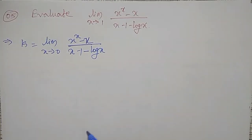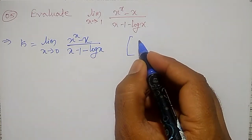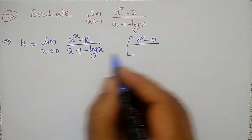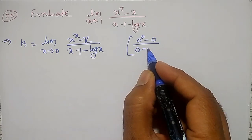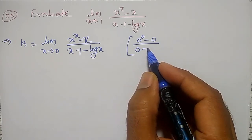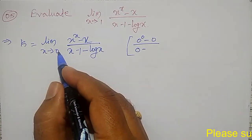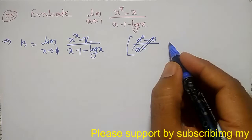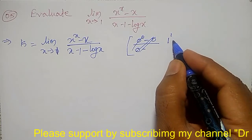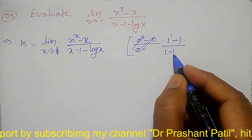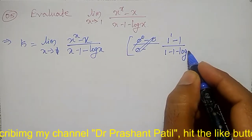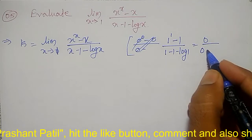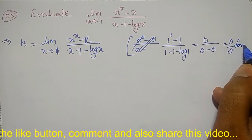Let me call this equal to k: limit as x tends to 1 of x raised to x minus 1 divided by minus x, divided by x minus 1 minus log of x. Now let me check which form it is. At x equal to 1, it becomes 1 raised to 1 minus 1, divided by 1 minus 1 minus log 1. That is 0 divided by 0 minus 0.